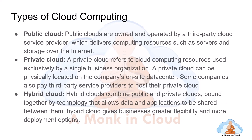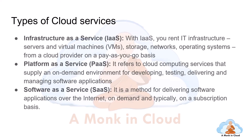Now let's go through the types of cloud services. There are predominantly three types. The first one is Infrastructure as a Service (IaaS), where you rent infrastructure — that is, servers and virtual machines, storage, networking, and operating systems from a cloud provider on a pay-as-you-go basis. IaaS covers the data center physical facility, networking, firewall, security, and servers and storage.